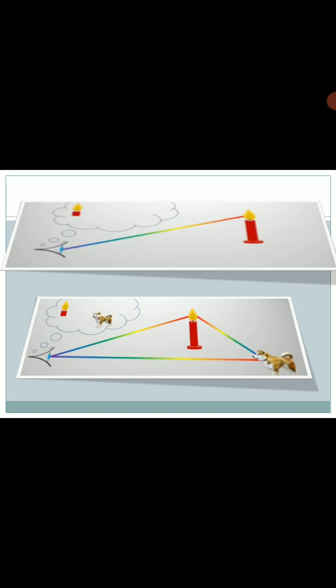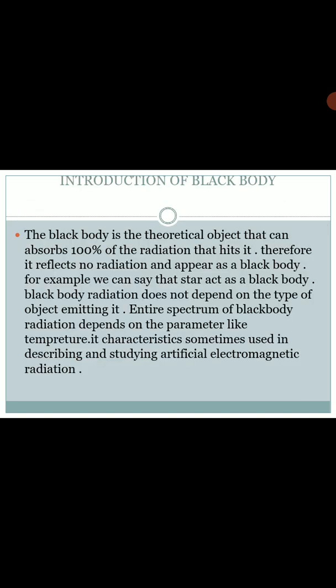Any object emits radiation when the temperature of that object is higher than the surrounding. Like a candle will radiate energy because its temperature is higher than the surrounding, and the sun radiates energy because it has more temperature than its surrounding. When these radiations hit any object, then absorption of some part of the radiation and reflection will occur.